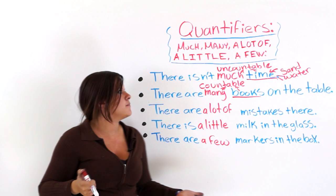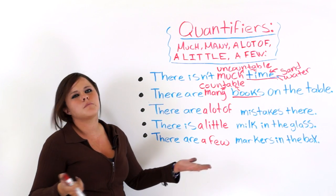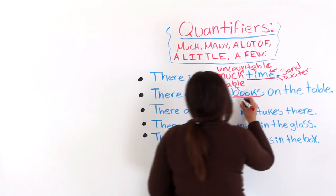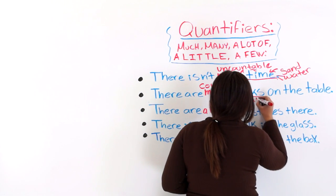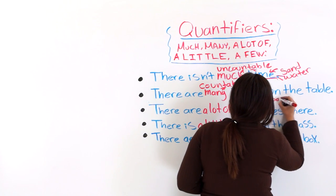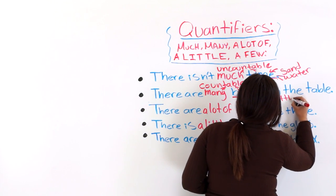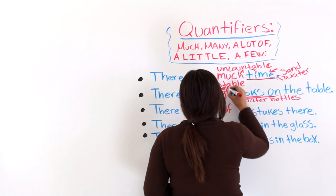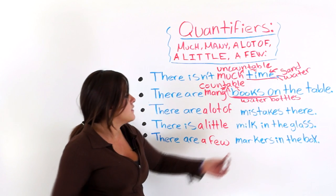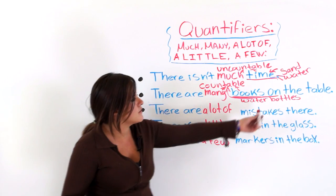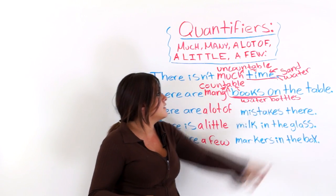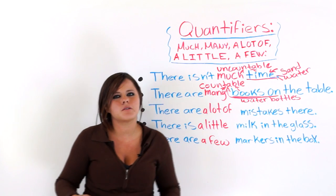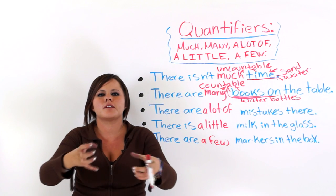But if you said bottles of water, they would be countable. You could say there are many water bottles — they're countable now. The water is countable now because you split it into units, into bottles. What you count are the units.